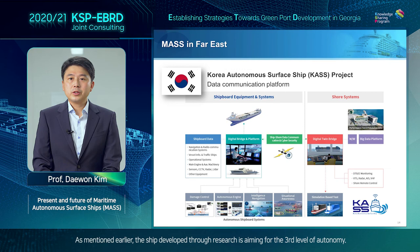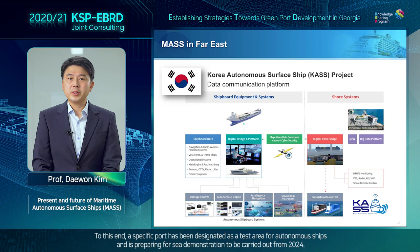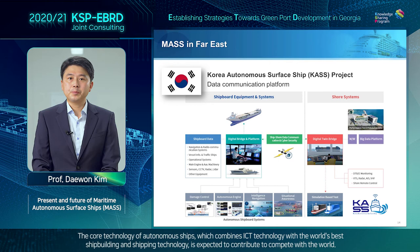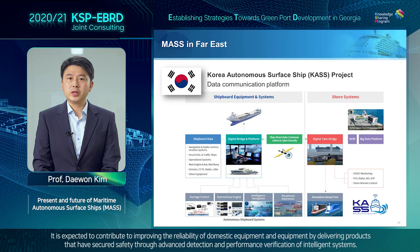The ship development through research is aiming for the third level of autonomy. To this end, a specific port has been designed as a test area for autonomous ships, and is preparing for sea demonstration to be carried out from 2024. The core technology of autonomous ships, which combines ICT technology with the world's best shipbuilding and shipping technology, is expected to contribute to competing with the world, and is also expected to improve the reliability of domestic equipment by delivering products that have secured safety through advanced detection and performance verification of intelligence systems.